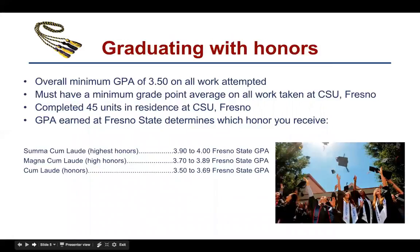Graduating with Honors. To graduate with honors, students must have a campus and cumulative GPA of 3.5 or higher. Students must have an overall minimum grade point average of 3.5 or higher on all work attempted. Students must also have a minimum GPA on all work taken at CSU Fresno and must have completed 45 units in residence at CSU Fresno. Your grade point average earned at California State University Fresno determines which honors you will receive.